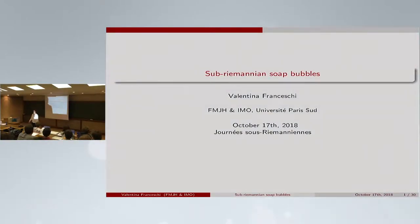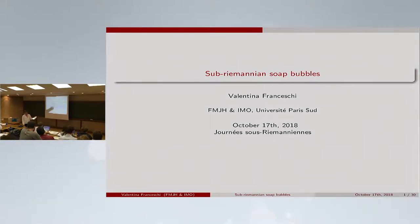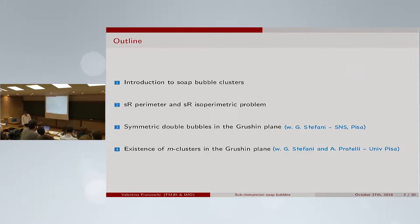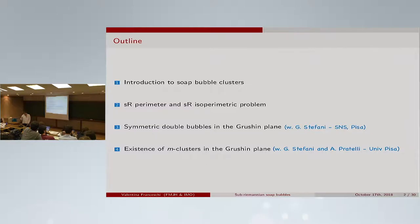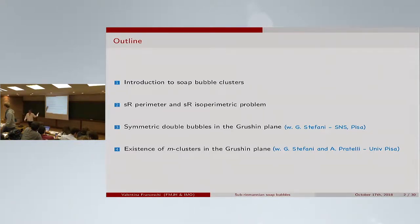Thank you very much, Yasin and Francesca. I am Valentina, actually, for everybody. And thank you very much, Luca, for this organization. It's always very nice to be here. Today I will talk about the Sub-Riemannian soap bubbles. This is the plan of the talk: I will first give an introduction to classical soap bubble clusters, then introduce the Sub-Riemannian perimeter and give a brief introduction to the Sub-Riemannian isoperimetric problem, and then talk about some results in the Grushin plane, a two-dimensional Sub-Riemannian structure, in collaboration with Giorgio Stefani and Aldo Pratelli.